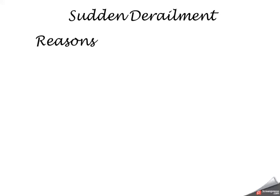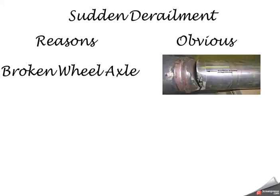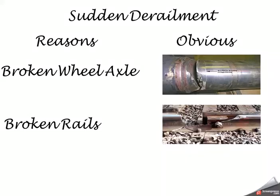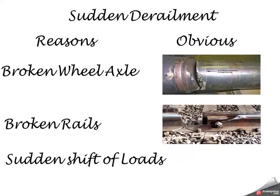Derailments are of two types. The first one is sudden derailment in which reason is quite obvious like broken wheel or axle, broken rail, sudden shift of load, or sudden obstruction.